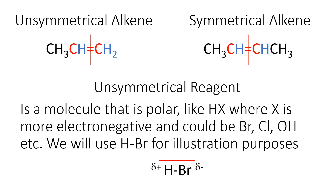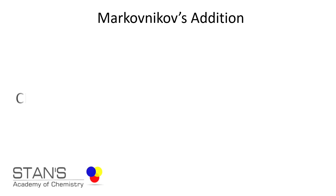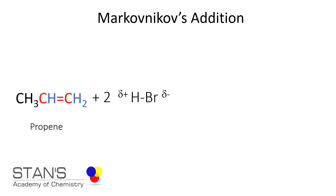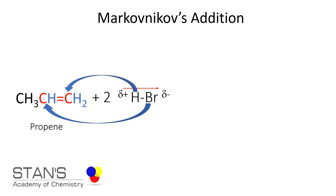In this example, we will be using propene treated with HBr — two moles of HBr. The rule states that the negative part of the reagent is added to the carbon atom of the alkene which has the least number of hydrogen atoms. In this case, it will be the second carbon atom. So, Br will be attached to the second carbon atom, and hydrogen will be attached to the first carbon atom.